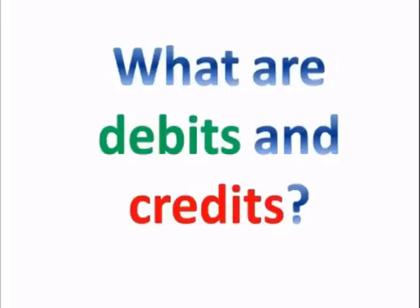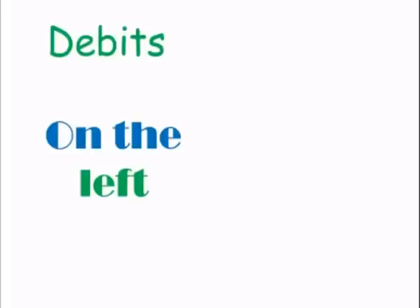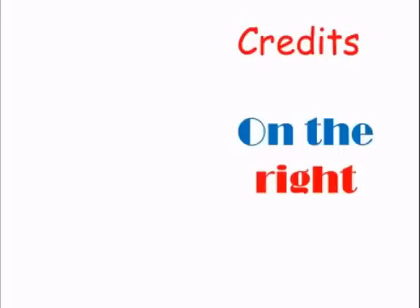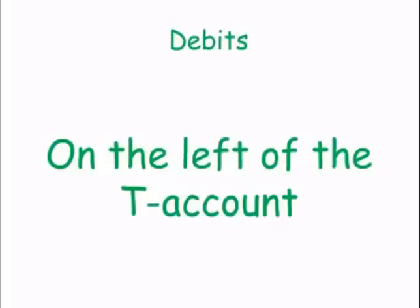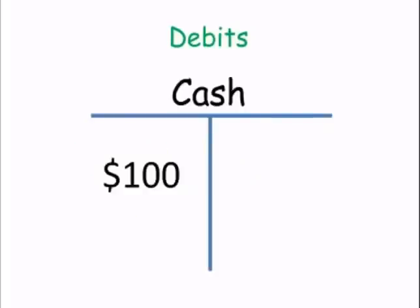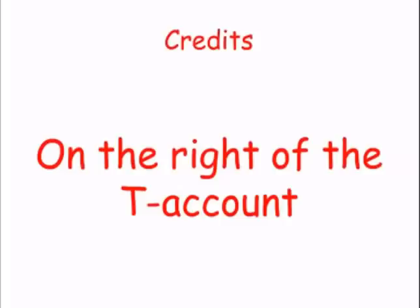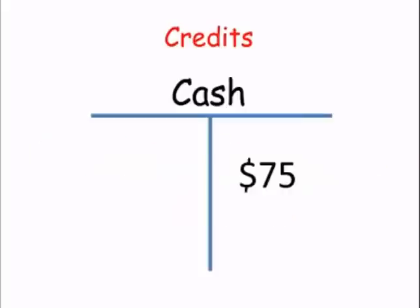What are debits and credits? A very common definition is that debits are on the left and credits are on the right. It's a pretty good definition, but it doesn't tell us how they're used. Debits are on the left-hand side of a T-account — here's a cash T-account where the $100 on the left-hand side is a debit. Credits are on the right-hand side — here's another cash T-account where the $75 on the right-hand side is a credit to cash.